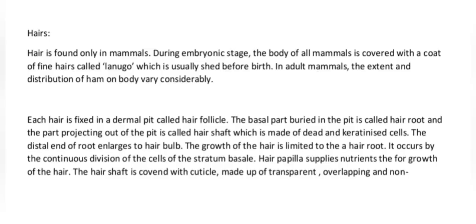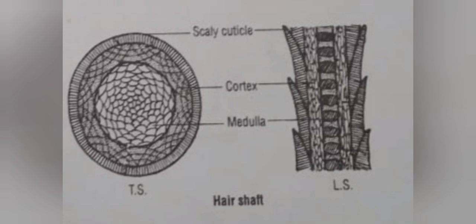Hair is found only in mammals. During the embryonic stage, the body of all mammals is covered with a coat of fine hairs called lanugo, which is usually shed before birth. In adult mammals, the extent and distribution of hair on the body vary considerably. Each hair is fixed in a dermal pit called hair follicle. The basal part buried in the pit is called hair root, and the part projecting out of the pit is called hair shaft, which is made of dead and keratinized cells. The distal end of the root enlarges to form the hair bulb. The growth of the hair is limited to the hair root.